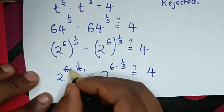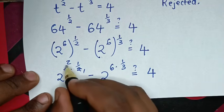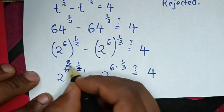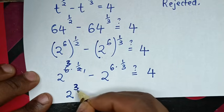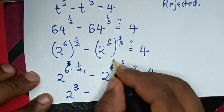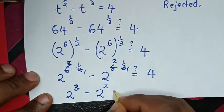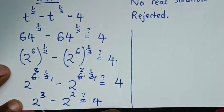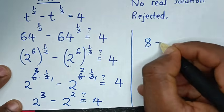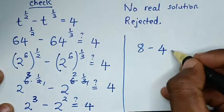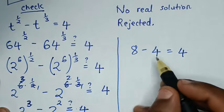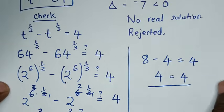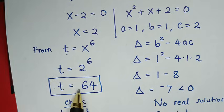Simplifying: 6 divided by 2 equals 3, giving 2 to the power of 3, and 6 divided by 3 equals 2, giving 2 to the power of 2. So we get 2 cubed minus 2 squared, which is 8 minus 4, equals 4. The left side equals 4, which matches the right side. This confirms that t equals 64 is correct.